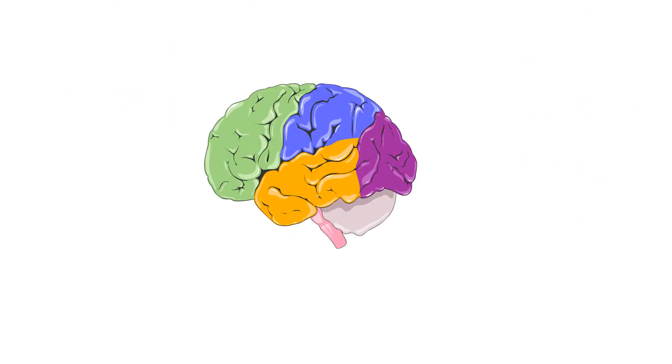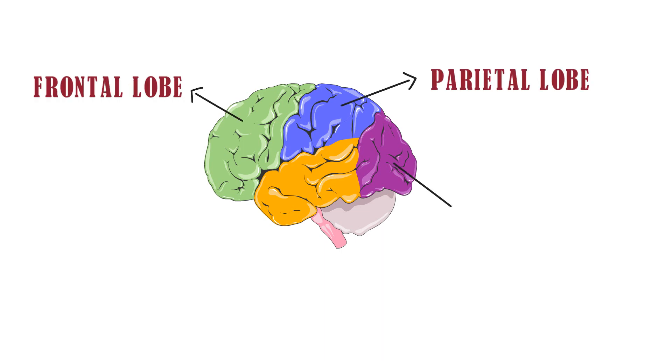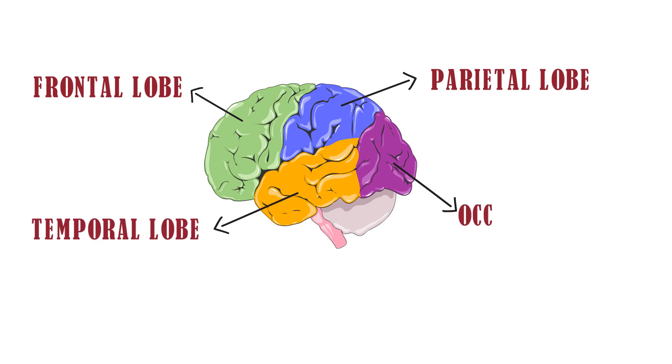Each cerebral hemisphere consists of an outer gray matter, also called the cerebral cortex, and inner white matter. The outermost layer of the cerebrum is the cerebral cortex, which consists of four lobes: the frontal lobe, the parietal lobe, the temporal lobe and the occipital lobe.